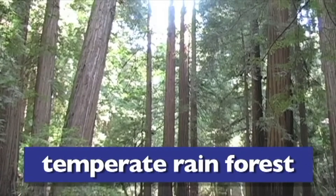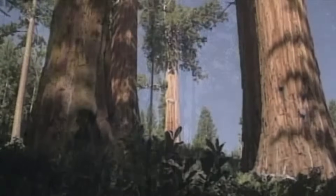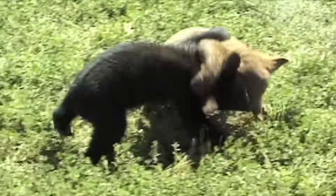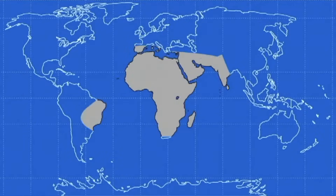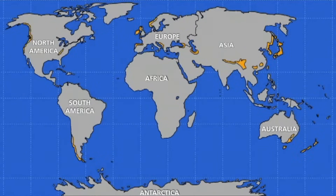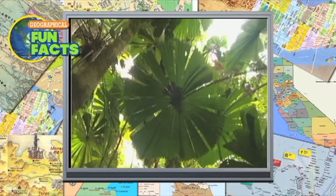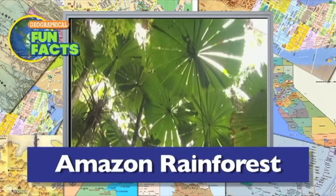There are also temperate rainforests, made up of evergreen coniferous trees and broadleaf deciduous trees. Animals that live in temperate rainforests include black bears, river otters, and more. Temperate rainforests are found in North America, South America, parts of Europe, Asia, and Australia. Here's another geographical fun fact: do you know the name of the largest tropical rainforest in the world? It's in South America — it's called the Amazon rainforest.